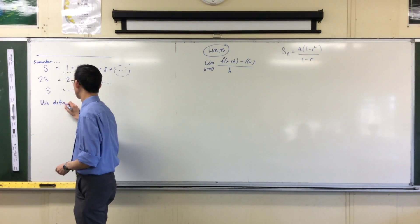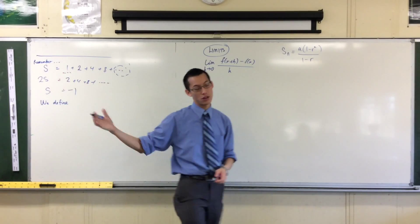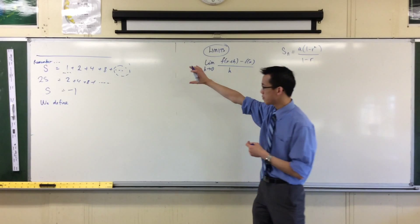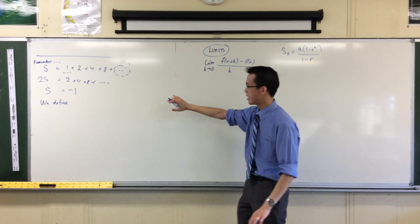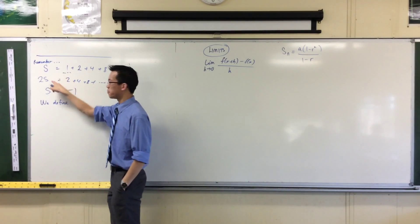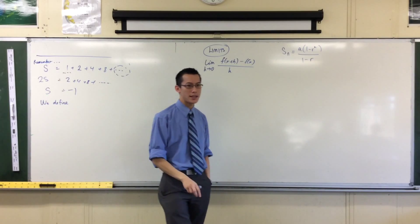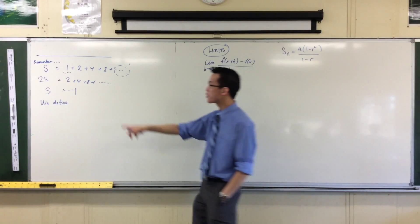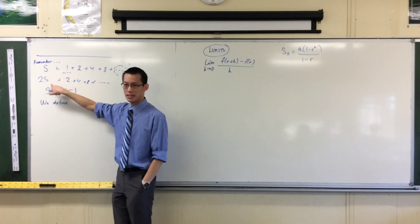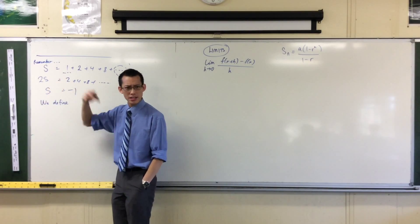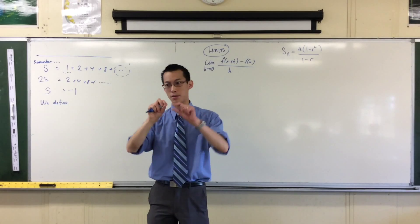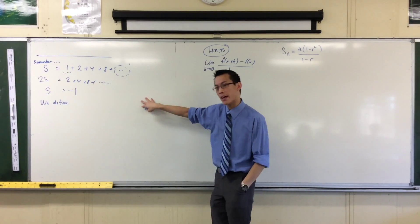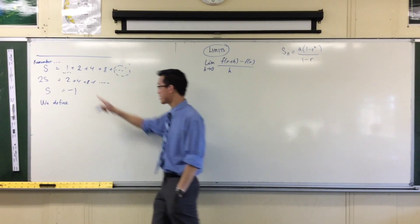It's the gradient of the tangent at a particular point. So, we used this idea limits to wrestle this guy to the ground, and we succeeded. Well, we're going to use limits to take something like this and work with it. So, you've already got this written, but underneath it, I want us to write this. We define...